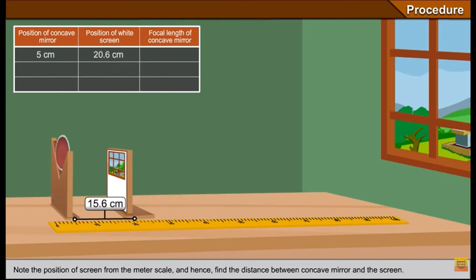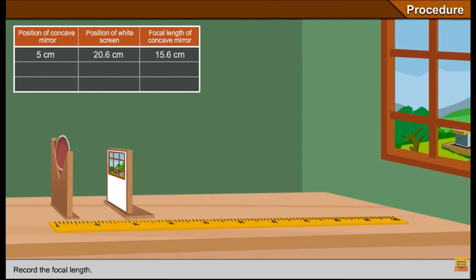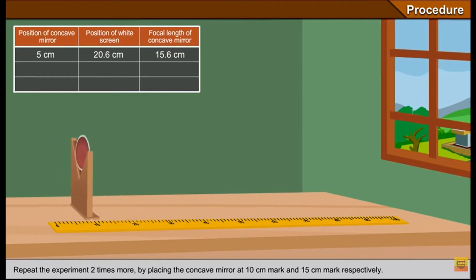Here first is 5 centimeter where the mirror was placed and position of the screen is 20.6 centimeter and the difference between them is 15.6 centimeter and that is the focal length of concave mirror. So the difference between the screen and the mirror, the gap between them, that is the focal length. Screen is placed at focus actually.